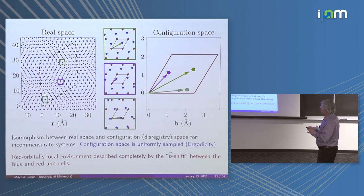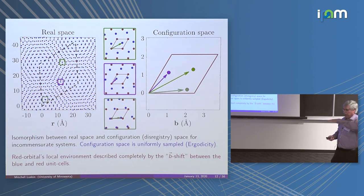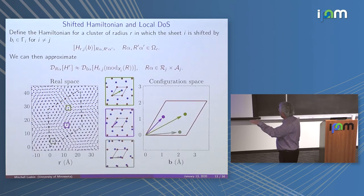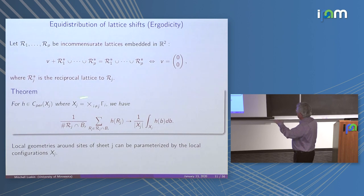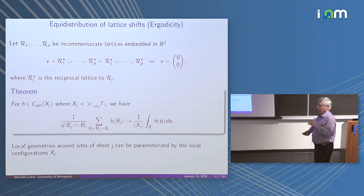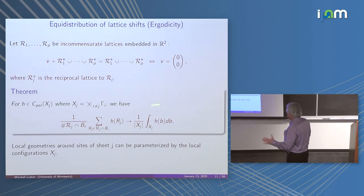If we go and evaluate H at every red site, it's the same as averaging — staying at one red site and just shifting the blue layer around. We invoke this where H could be things like local density of states, local conductivity, or site energy. This lets us study pretty much all the different properties we're interested in.